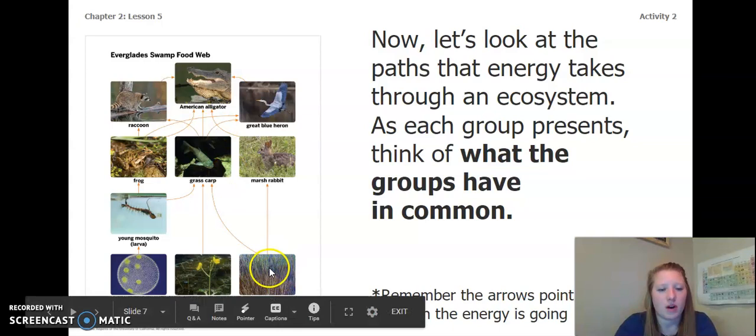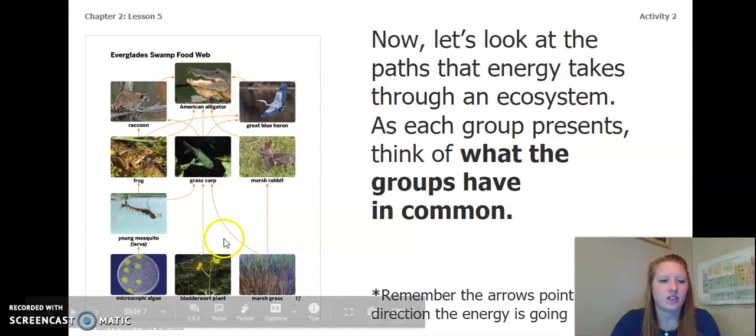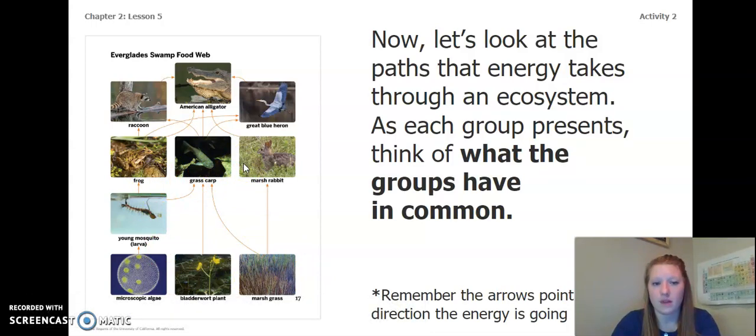Another path we can go is marsh grass. The energy goes into the grass carp, and then from there, the energy from the grass carp goes to the blue heron. And the energy from the blue heron goes to the American alligator. So one thing I notice that they have in common is that the alligator seems to be the top, which it is the top predator of this food web. Another thing that I notice is that all the energy is going up in this diagram and starts at some type of plant. And then it goes through a herbivore. And then after it goes through the herbivore, it goes into an omnivore or a carnivore, and it ends at a carnivore. Did you notice anything else?